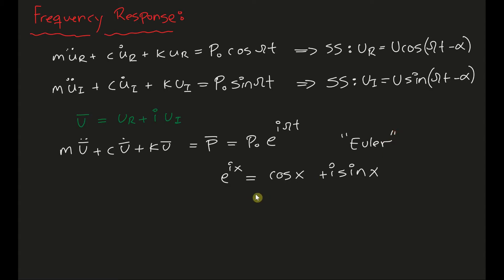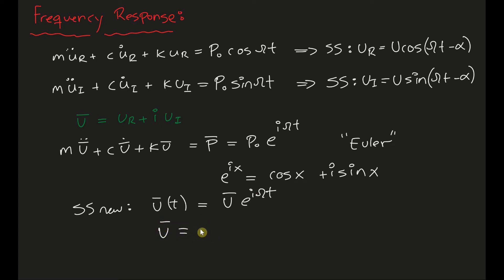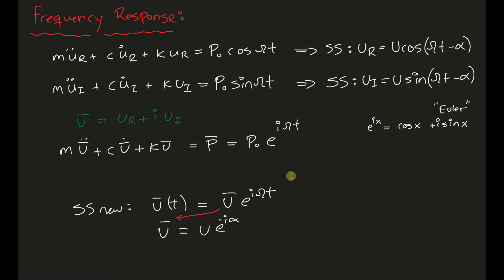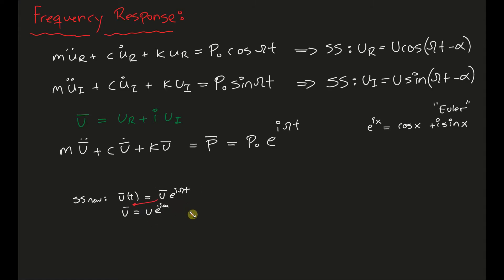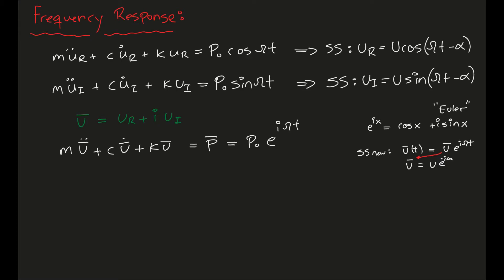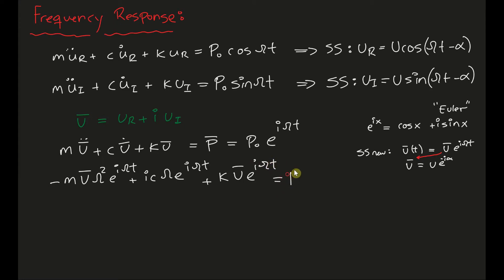That's what it's going to look like. The excitation has an exponential in it, and of course the steady state response is also going to have the exponential. Here, U_bar is the complex amplitude and it equals U * e^(-i*alpha) — it contains both amplitude and phase information, and that's what U_bar represents. Now I want to plug U(t) into my compound equation of motion and replace the inertial terms. U and alpha are the same as response amplitude and phase lag — always keep that in mind.